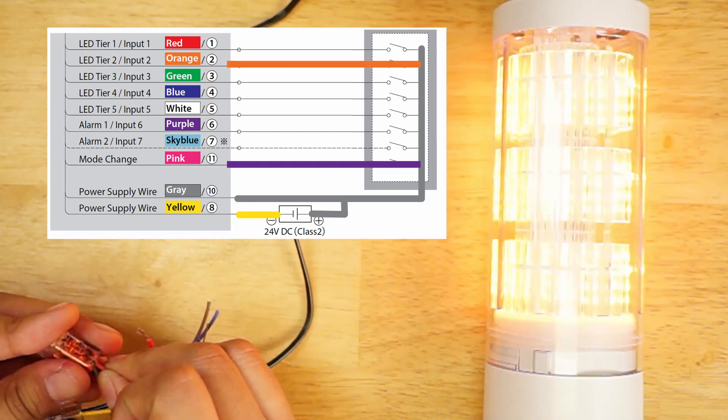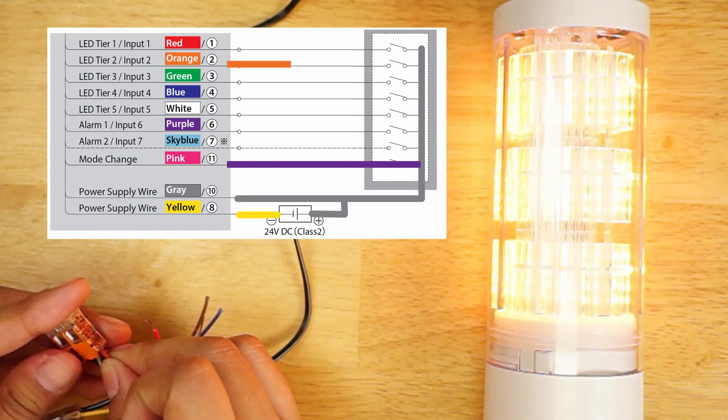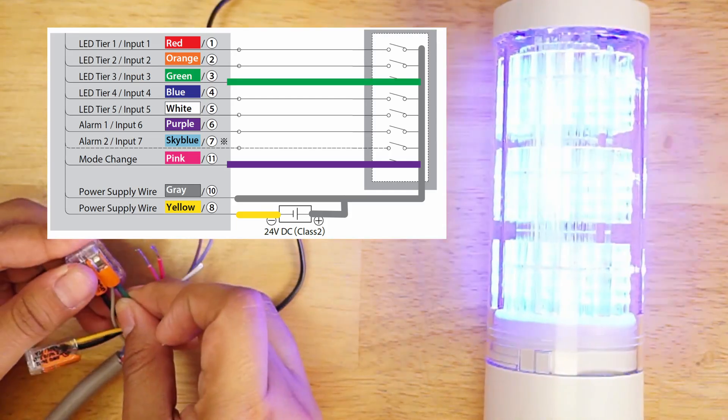With the orange wire, group 2 is all amber. With the green wire, group 4 is all blue.